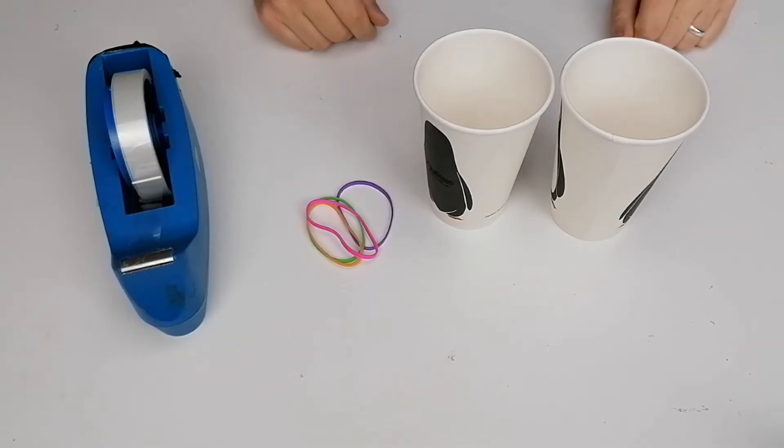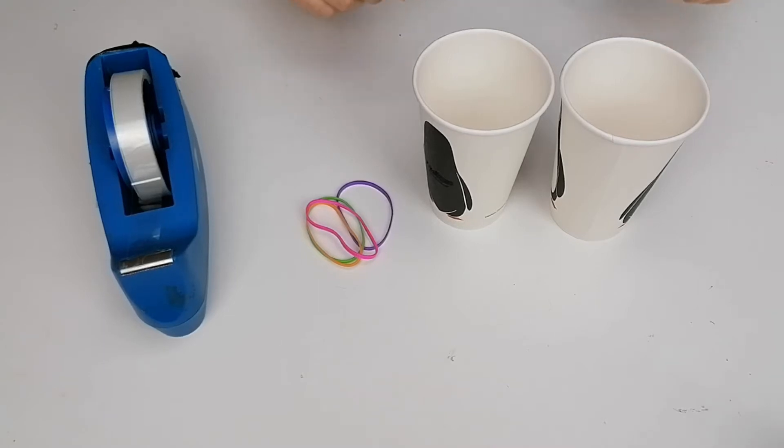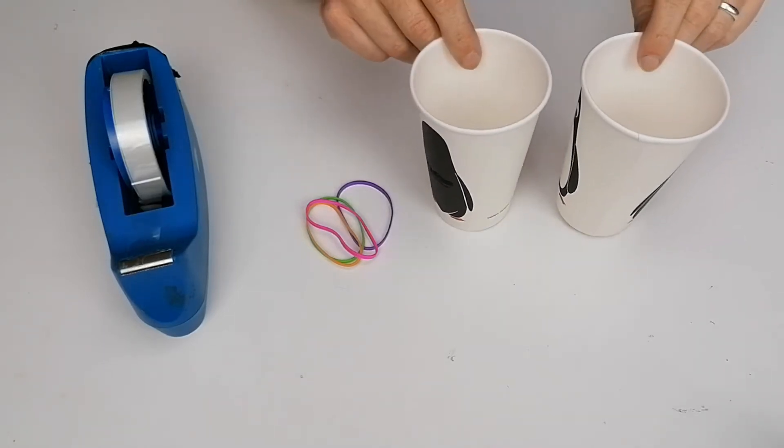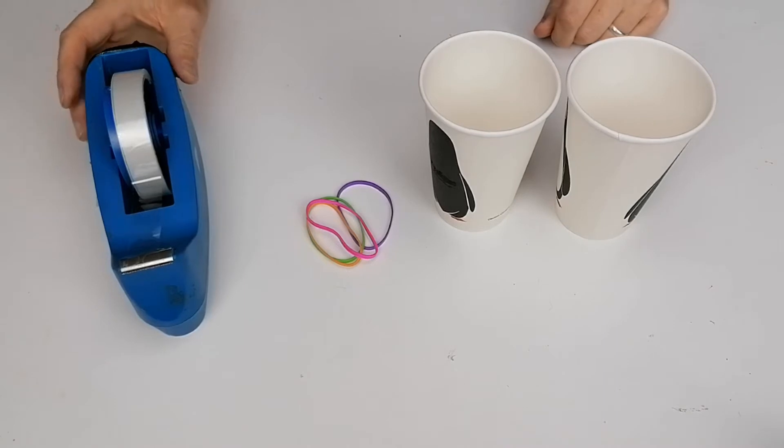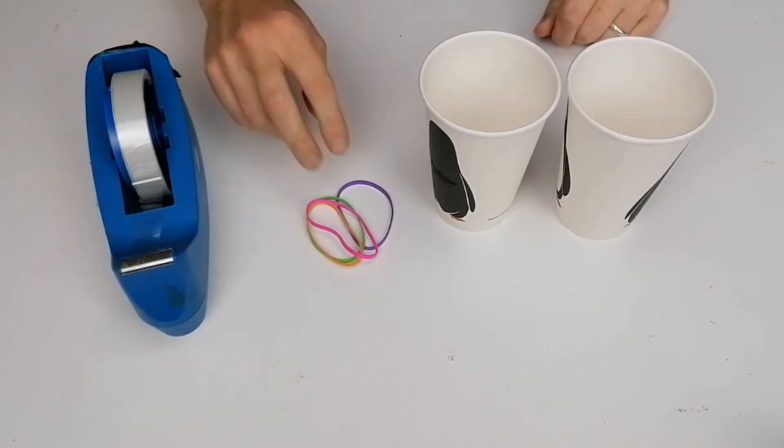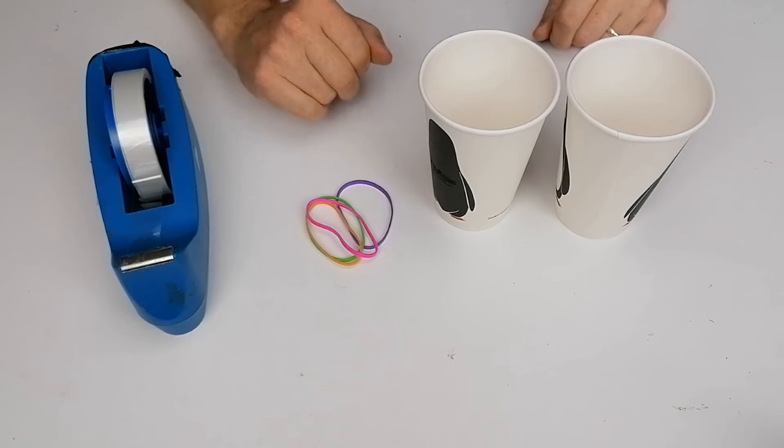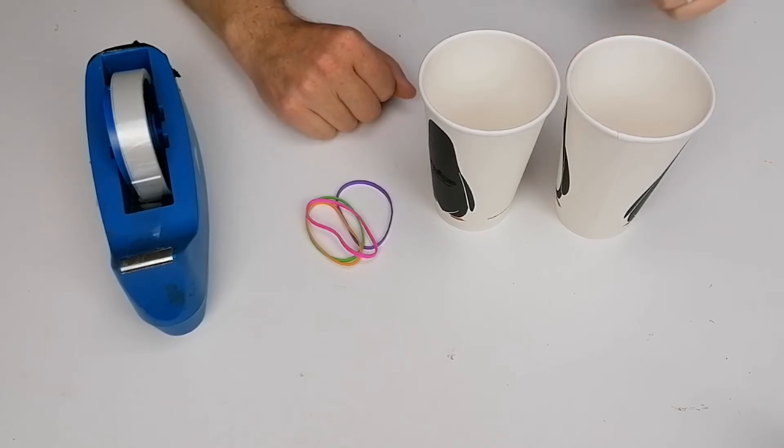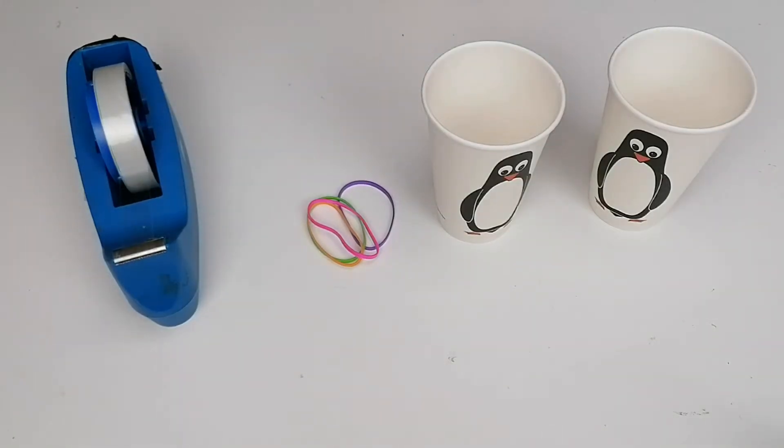In this activity we're going to make a spinning airplane. They're going to be made out of two coffee cups, so you'll need two coffee cups, some sellotape to stick them together, and then you're going to need some elastic bands—at least three or four of them.